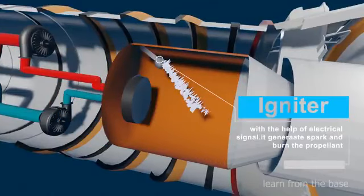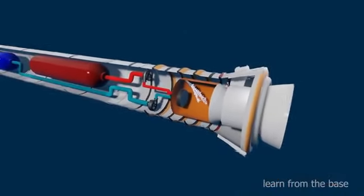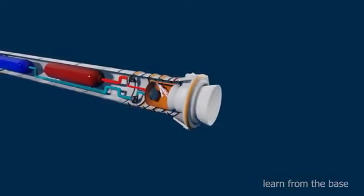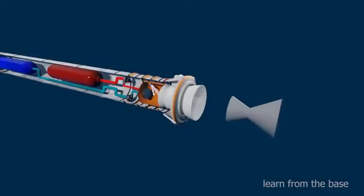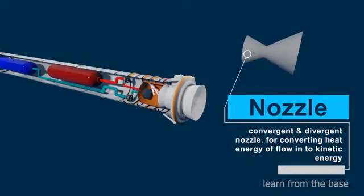Igniter. With the help of electrical signal, it generates spark and burn the propellant. These are the nozzle. It is used to expand and accelerate the combustion gas.